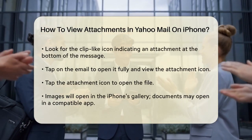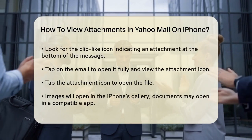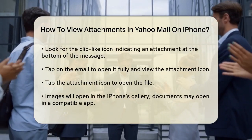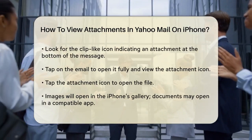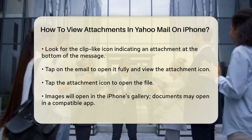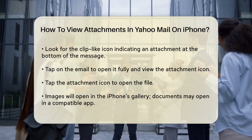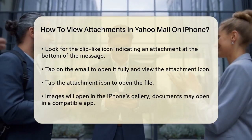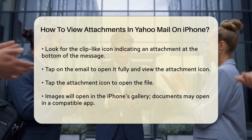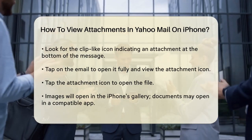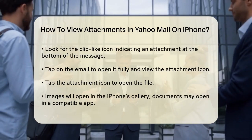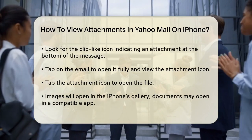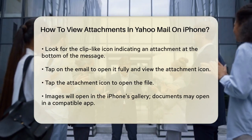You should see the attachment icon within the email body. Tap on this icon to open the attachment. If the attachment is an image or a document, it will open directly within the app. For example, if it's a photo, it will open in your iPhone's gallery, and if it's a document, it might open in a compatible app like Files or another document viewer.